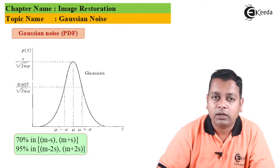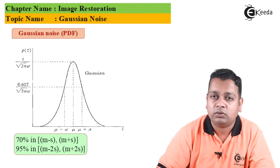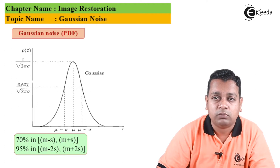70% of information lies in the range μ - σ to μ + σ, whereas 95% of information lies in the range μ - 2σ to μ + 2σ.